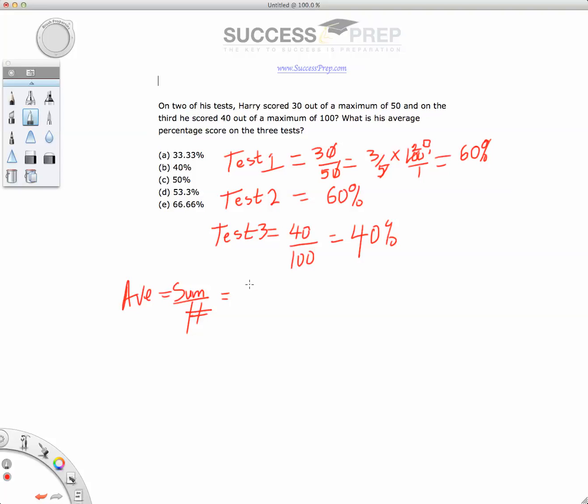...the sum of the things that we want to add up will be 60 plus 60 plus 40, which is pretty much all the scores for all three tests. And you have to divide that over three.